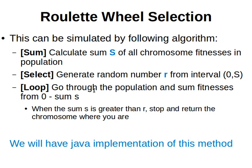If that partial sum is greater than R, then we stop there and select the chromosome we're at. We select the chromosome we have at that iteration.